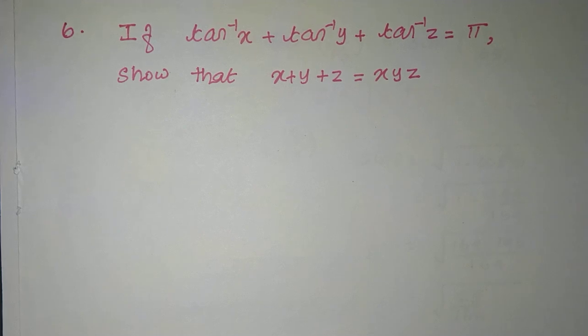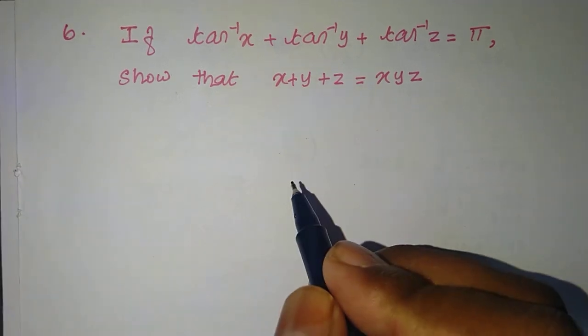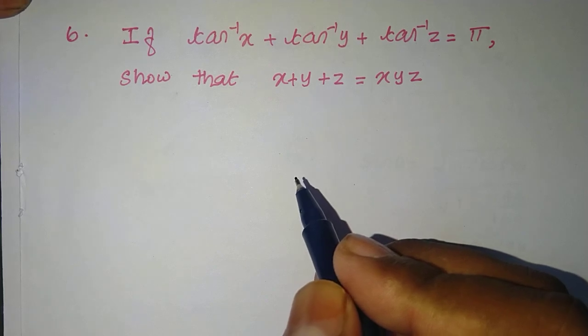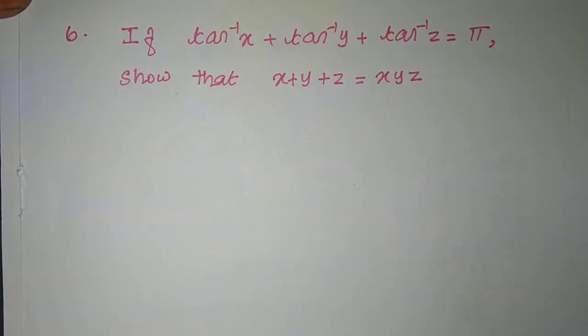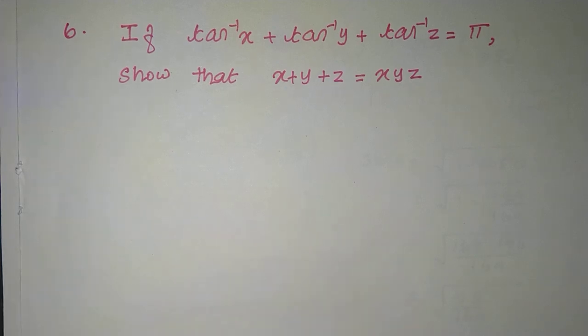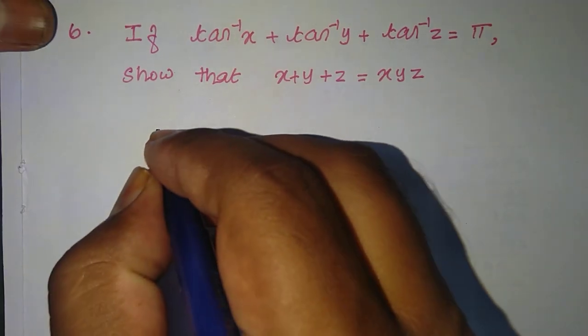Exercise 4.5, sixth sum. If tan inverse of x plus tan inverse of y plus tan inverse of z equals pi, then show that x plus y plus z equals xyz.